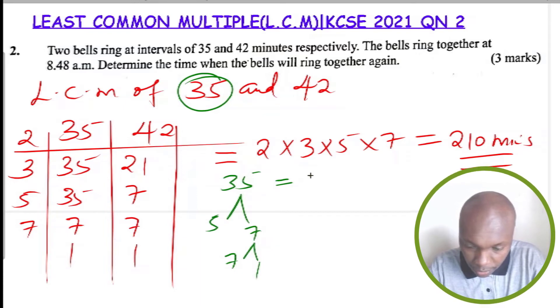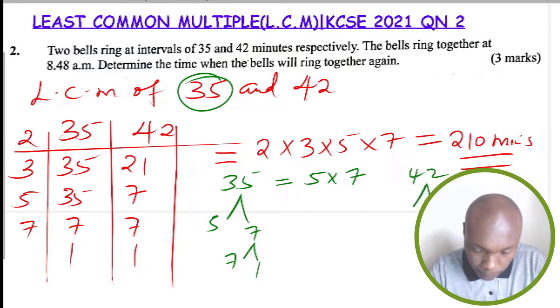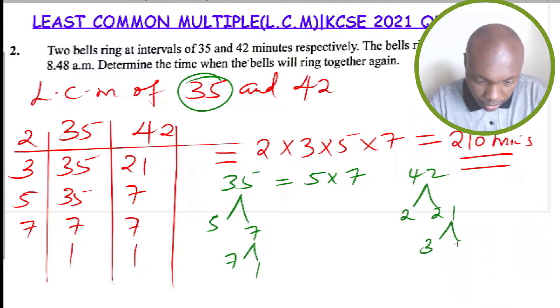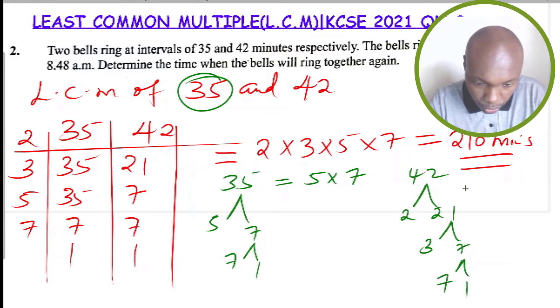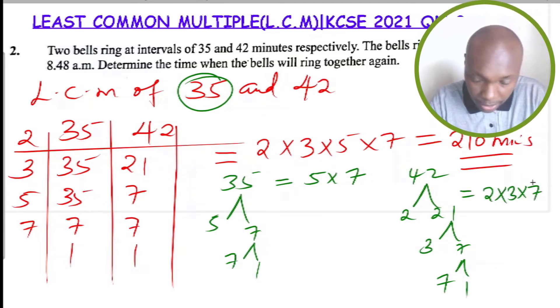Here the factors of 42 as well: divide 42 by 2 to get 21, divide 21 by 3 you get 7, divide 7 by 7 you get 1. So the factors of 42 will be 2 multiplied by 3 multiplied by 7.